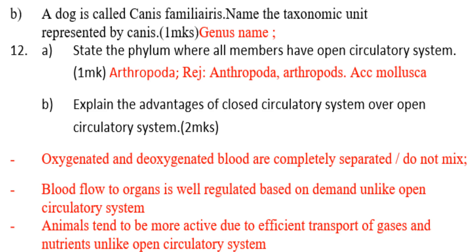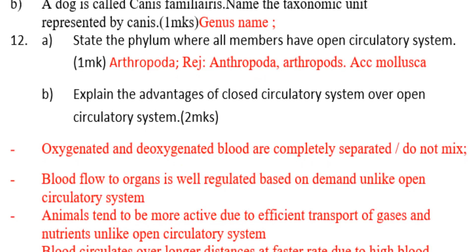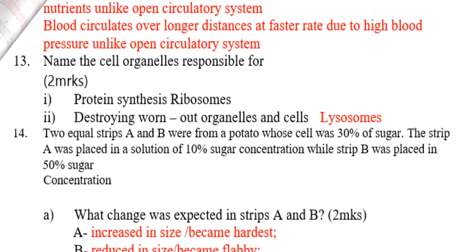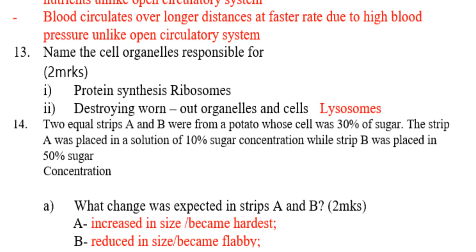This question is very common and you can easily get it in your exam. They can tell you to explain the advantages of a closed circulatory system over an open circulatory system. Number three: animals tend to be more active due to efficient transport of gases and nutrients. Number four: blood circulates over longer distances at a faster rate due to high blood pressure.